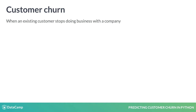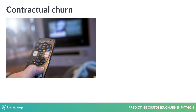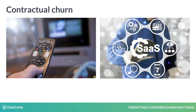Churn can be defined in a variety of ways. Contractual churn is when a customer is under contract for a service and decides to cancel. This can be found in cable TV and SaaS products.